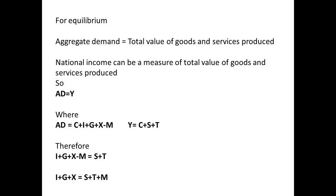What is now needed for equilibrium? At the equilibrium point, aggregate demand equals the total value of all goods and services produced. The measure of goods and services produced that we can use here is national income. So aggregate demand AD equals national income Y at equilibrium. Since AD equals Y at equilibrium, we can say that aggregate demand equals consumption plus investment plus government spending plus exports minus imports, and that national income equals consumption plus savings plus tax.